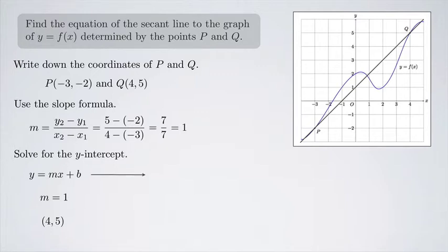So now I can plug in. I get 5 equals 4 plus b. And when I solve that, I get b equals 1. So that tells me that the equation of my secant line is y equals x plus 1.